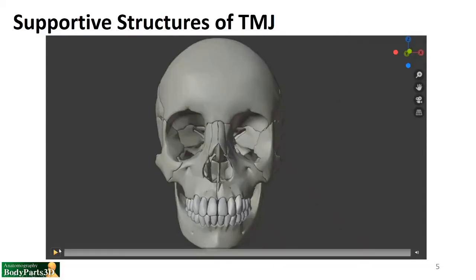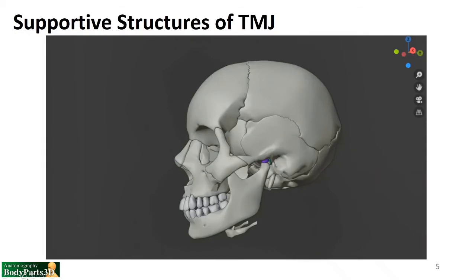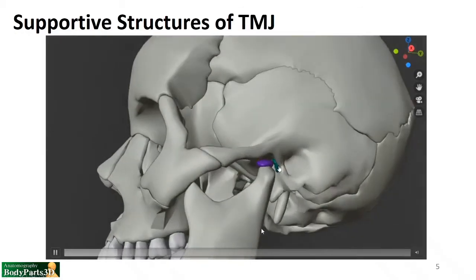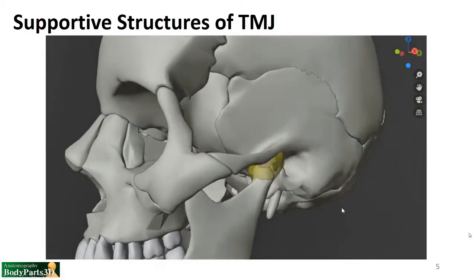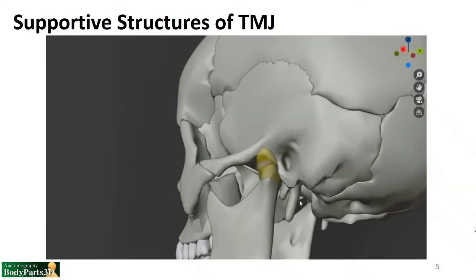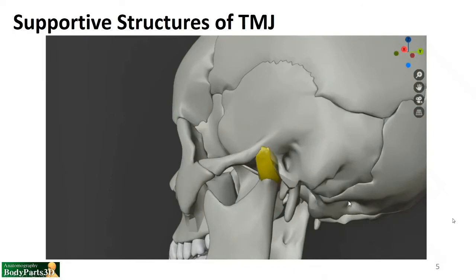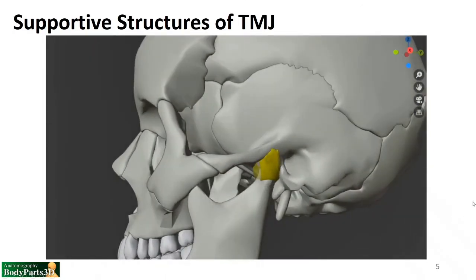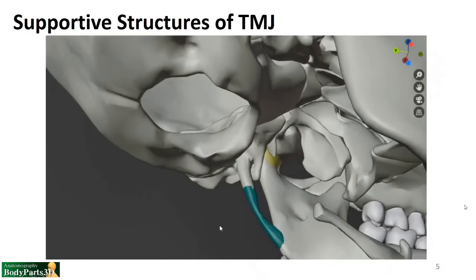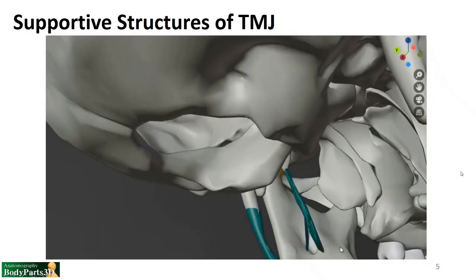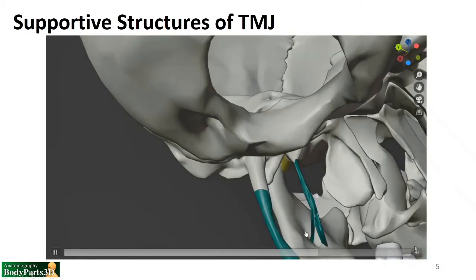Now let's look at these structures on the model. Turning laterally, we see the articular disc in purple, and just behind it is the retroarticular or retrodiscal tissue. All of that is encompassed within the articular capsule of the joint. Laterally on the capsule there is a thickening, which is the lateral ligament. From a medial posterior view we see the stylomandibular ligament, and then more medial to that, the sphenomandibular ligament extending toward the area of the lingula.